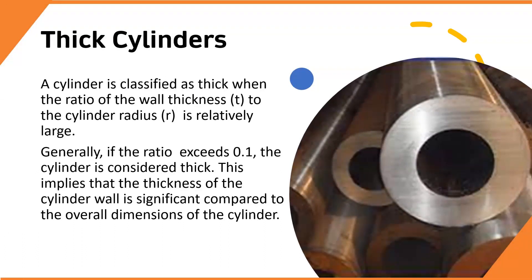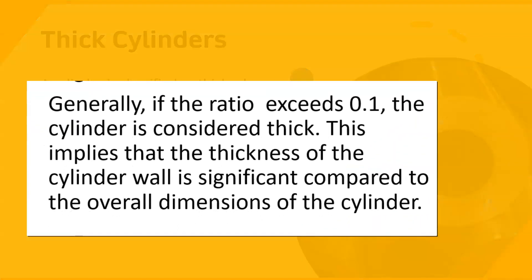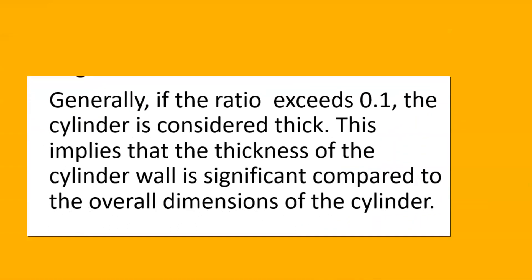We now look at stresses in thick cylinders. A cylinder is classified as thick when the ratio of the wall thickness, T, to the cylinder radius, R, is relatively large. Generally, if the ratio exceeds 0.1, the cylinder is considered thick.